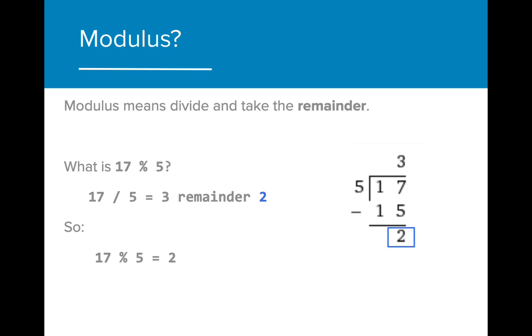You may have noticed that there is another operator that is commonly used in programming that you might not be familiar with. Modulus is used to find the remainder of a given division between two values. When we divide 17 by 5, the result is 3, remainder 2. Modulus is only concerned with the remaining value, and thus will provide the answer 2.